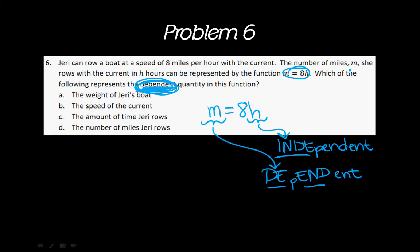So m, you need to look here and see what it stands for. It's the number of miles that she rows. So then just look for that answer in the answer choices. And that would be D, the number of miles Jerry rows. So that's all you have to do is just look at the equation.